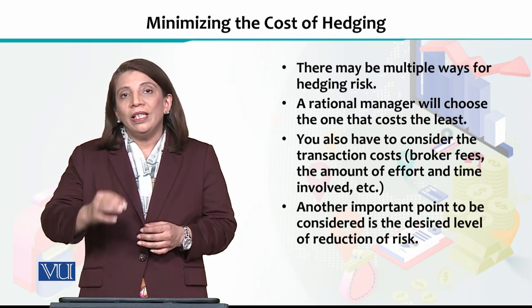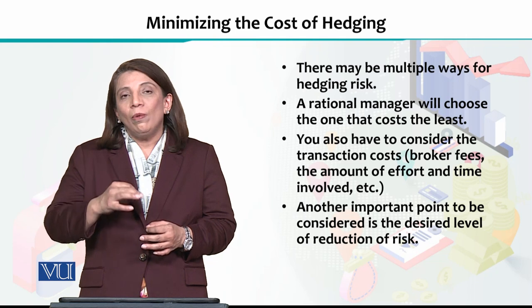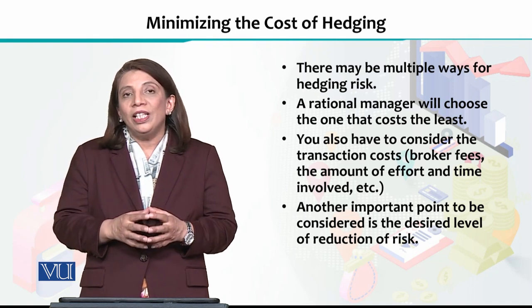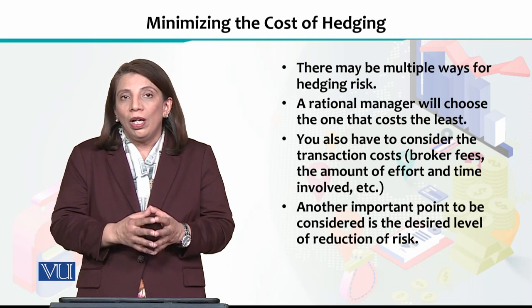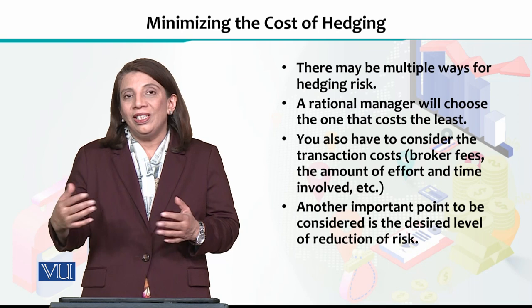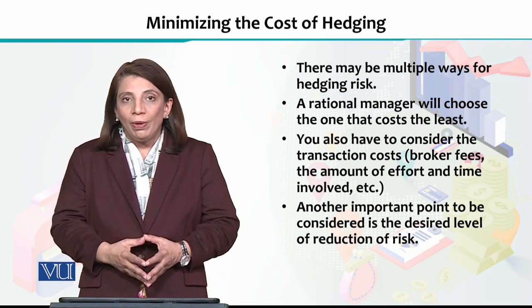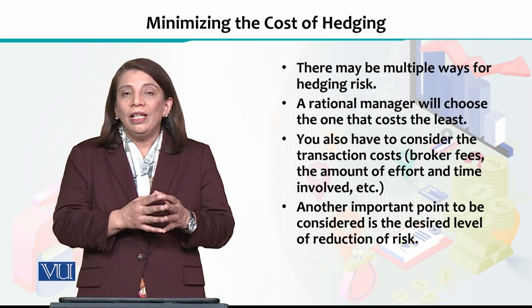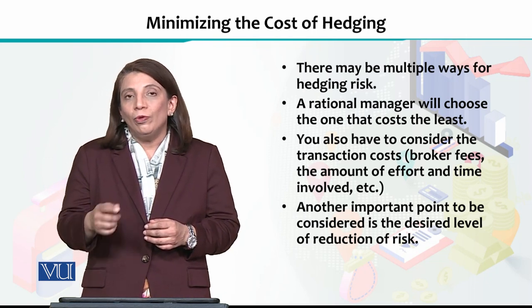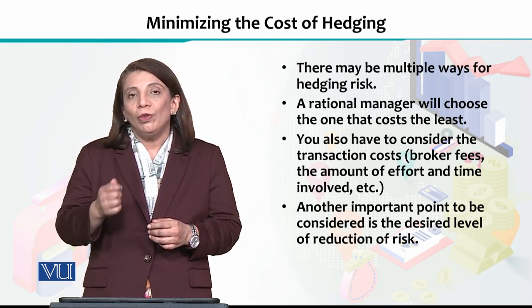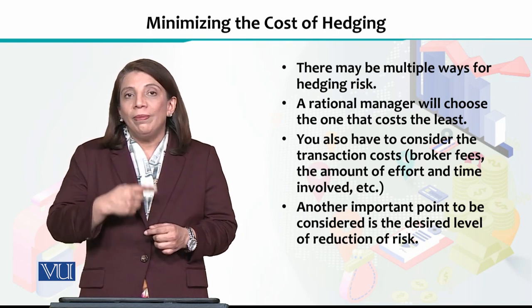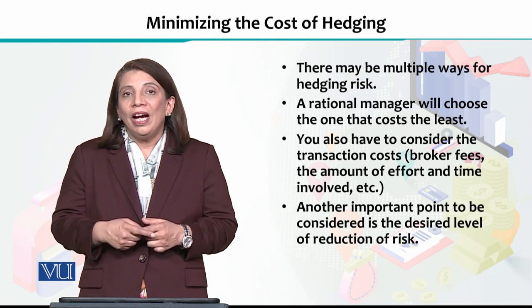To select which method to use, what they do is they try to analyze what are the various types of costs involved if we follow Option A, Option B, or Option C for the hedging purpose. Basically, it is important, and they always come up with that type of option — they select the hedging option by looking at the cost aspect, where cost is minimized.